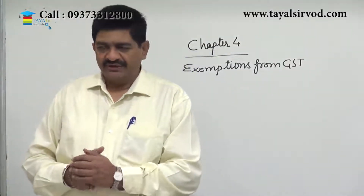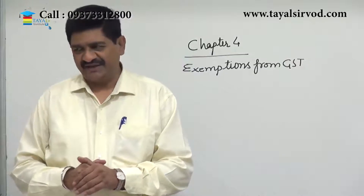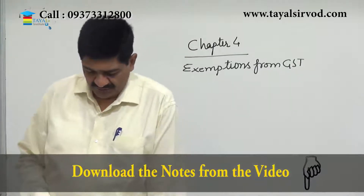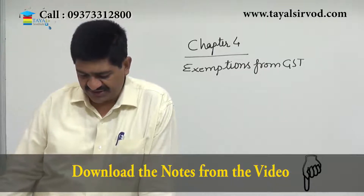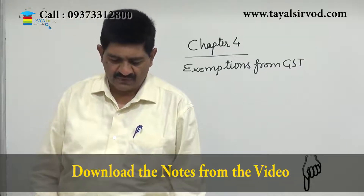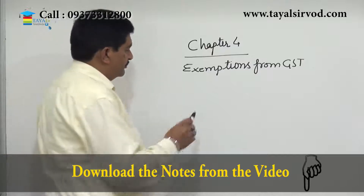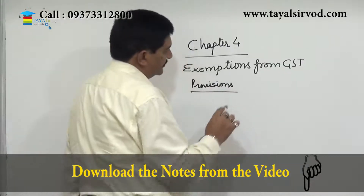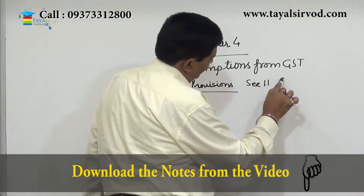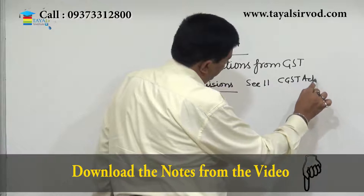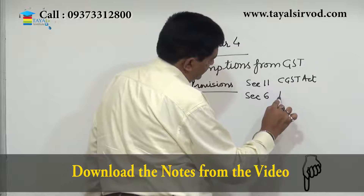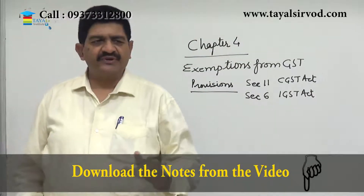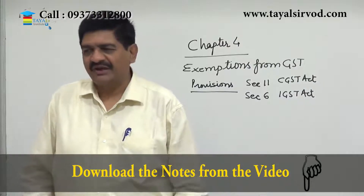The chapter today is chapter number four - exemptions from GST. What is expected by the institute from this chapter: you should be able to describe the power of the government to grant exemptions under CGST and IGST. The provisions are only two sections: section 11 of the CGST Act and section 6 of the IGST Act. The same provisions are bound to be there in the SGST Act also, but that is not a part of our syllabus.